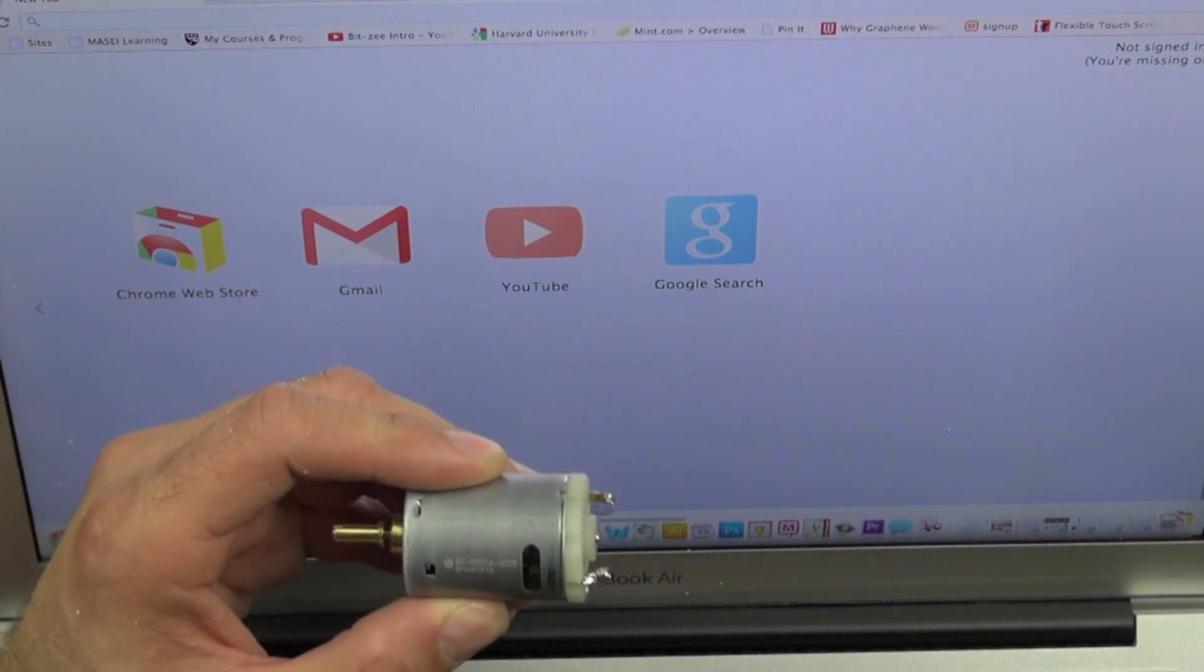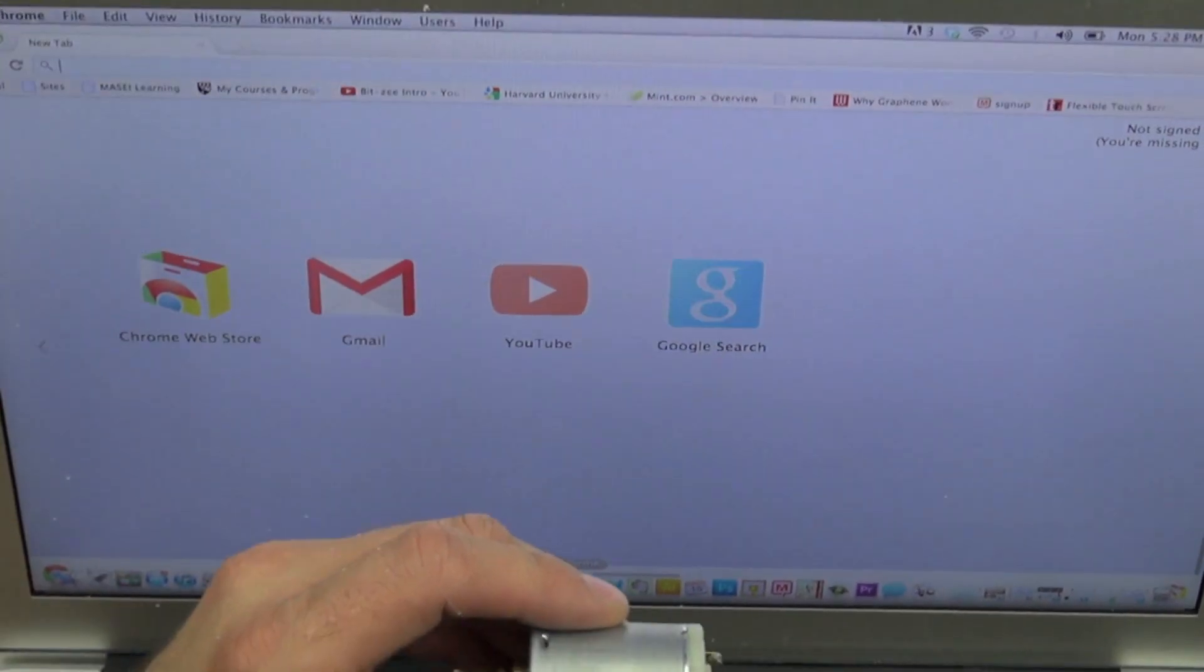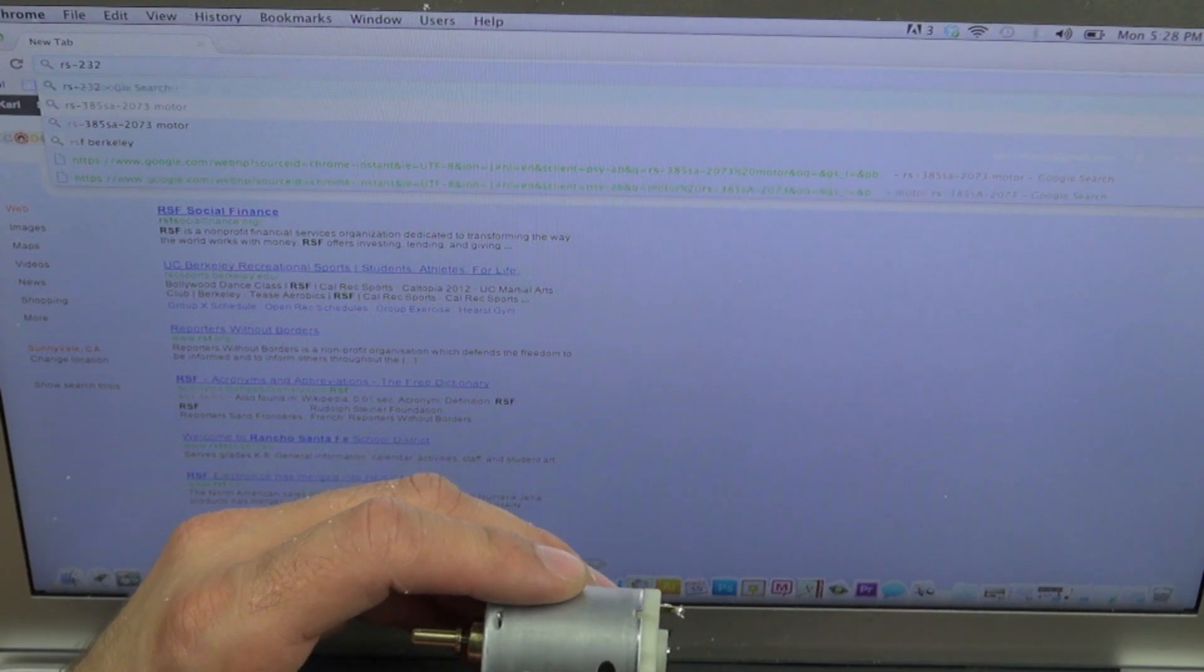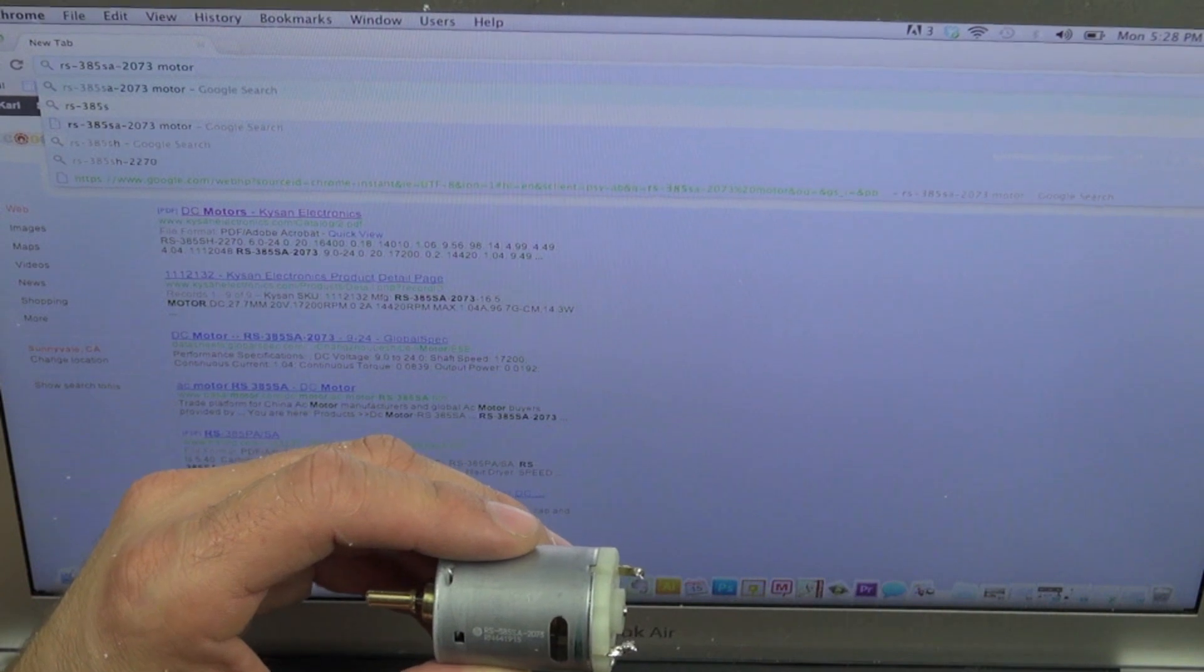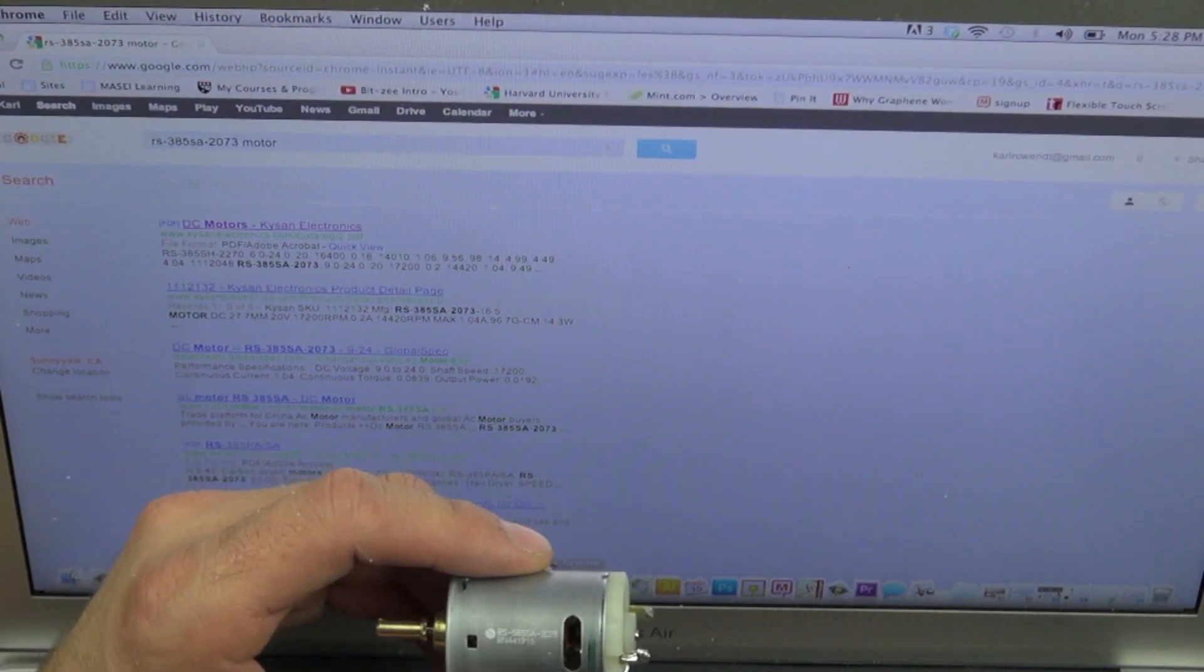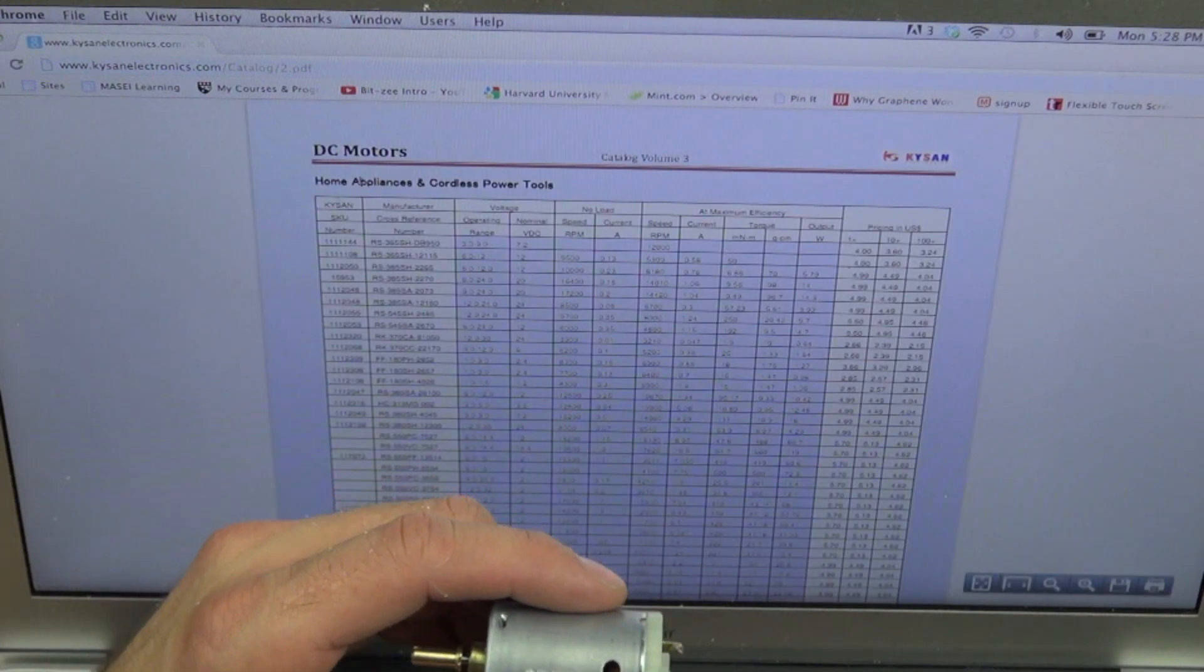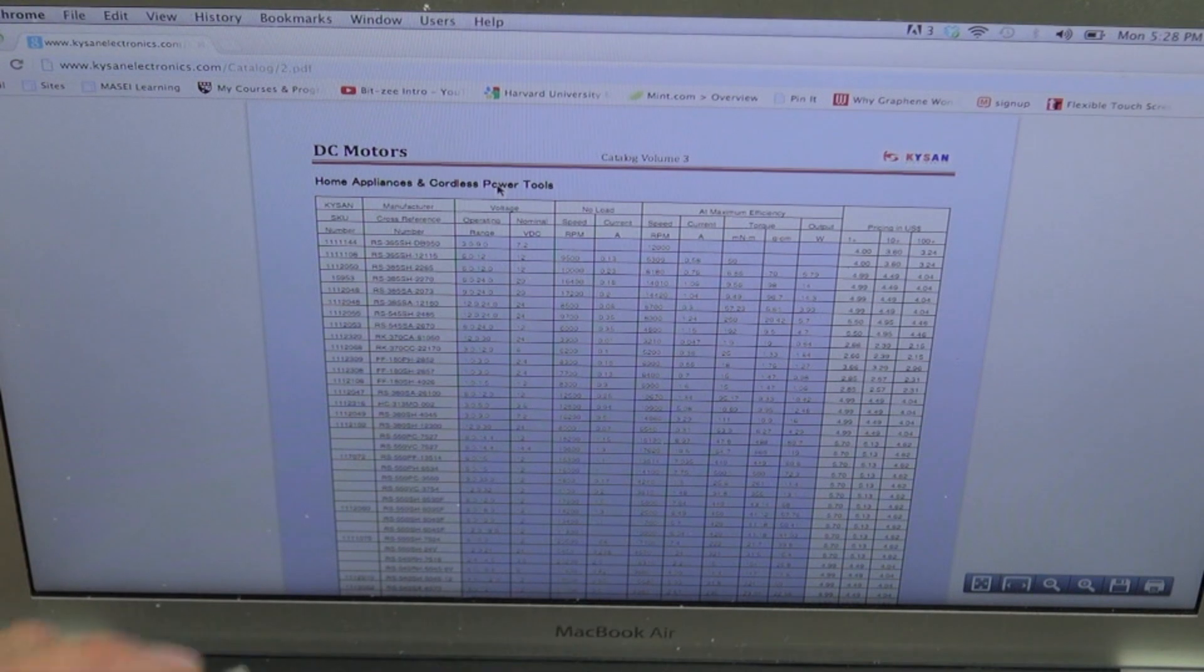So it says RS. We're in our internet browser here. We're going to type in RS and then it says dash 385SA, dash 2073. Alright, and we got motor in there already and it says DC motors, Kaisan motors. So this is a specification sheet and we're going to see if we can find our motor on this sheet and that will give us some data about it.